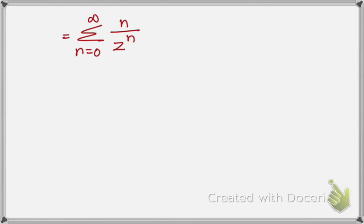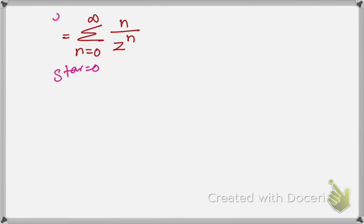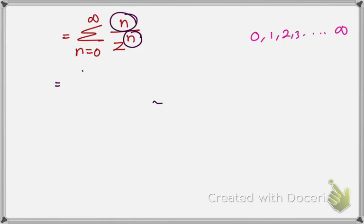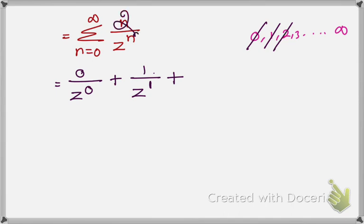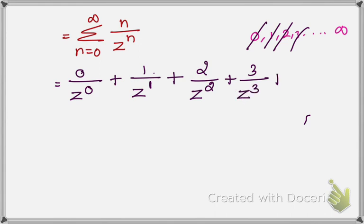Now you start applying the values of n. n starts at 0 and ends at infinity: 0, 1, 2, 3 up to infinity. First put n equals 0: you get 0 over Z to the power of 0, which is 0. Then n equals 1: you get 1 over Z to the power of 1. Then n equals 2: you get 2 over Z to the power of 2. Then n equals 3: you get 3 over Z to the power of 3, plus etc., up to infinity.